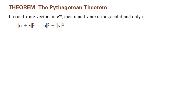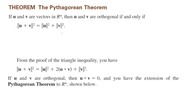We can now introduce the Pythagorean theorem for vectors. This theorem states that if u and v are vectors in n-space, then u and v are orthogonal if and only if the magnitude of u plus v squared equals the magnitude of u squared plus the magnitude of v squared. The proof follows easily: from the triangle inequality proof, the magnitude of u plus v squared equals the magnitude of u squared plus 2 times u dot v plus the magnitude of v squared. Since u and v are orthogonal, u dot v equals zero, so the middle term disappears, leaving just the sum of the squared magnitudes.